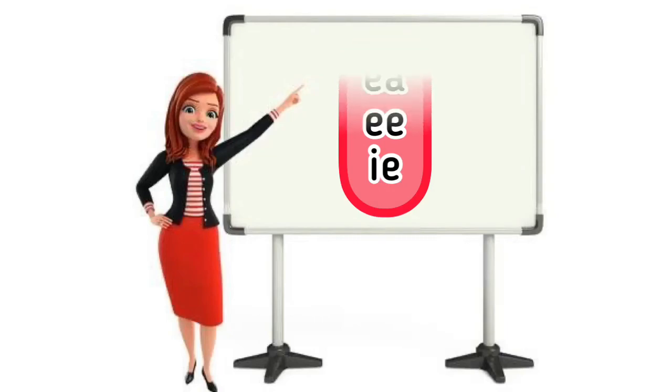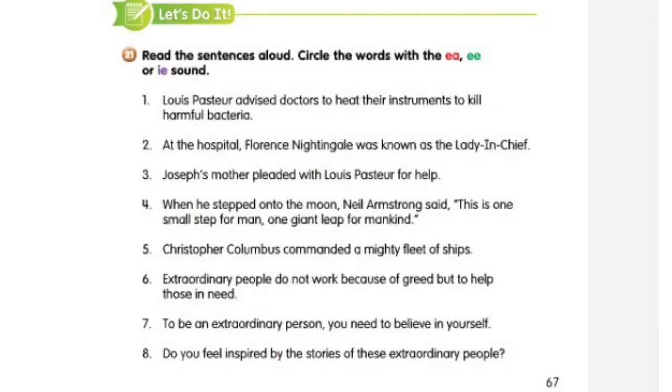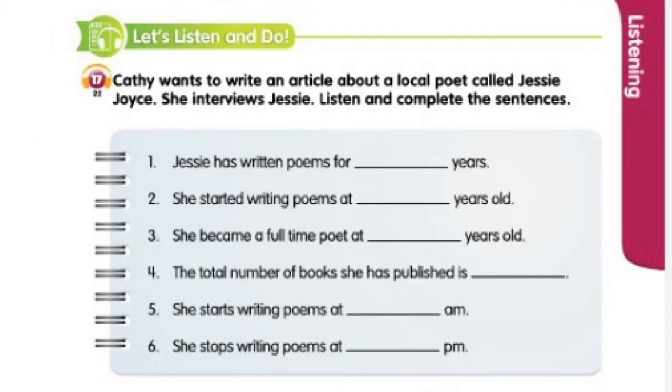Now, let's have practice. Circle the words with the E-A, E-E, or I-E sound from your textbook, page 67. And then, don't forget to complete the sentences on your textbook, page 65. Please capture those two assignments and then send it to Google Classroom.